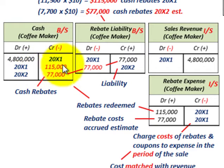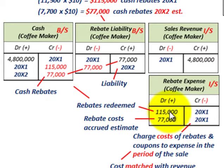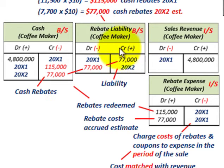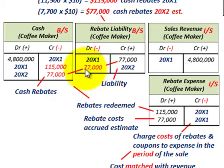For 20X1, we also had the $115,000 cash rebate already redeemed: credit cash $115,000 and debit rebate expense $115,000 on the income statement. The key rule is that any rebates not yet returned during the period must be set up as a liability on your balance sheet — in this case a credit of $77,000 for estimated second-year rebates. When those rebates are actually returned, you remove the liability and recognize the cash expense.